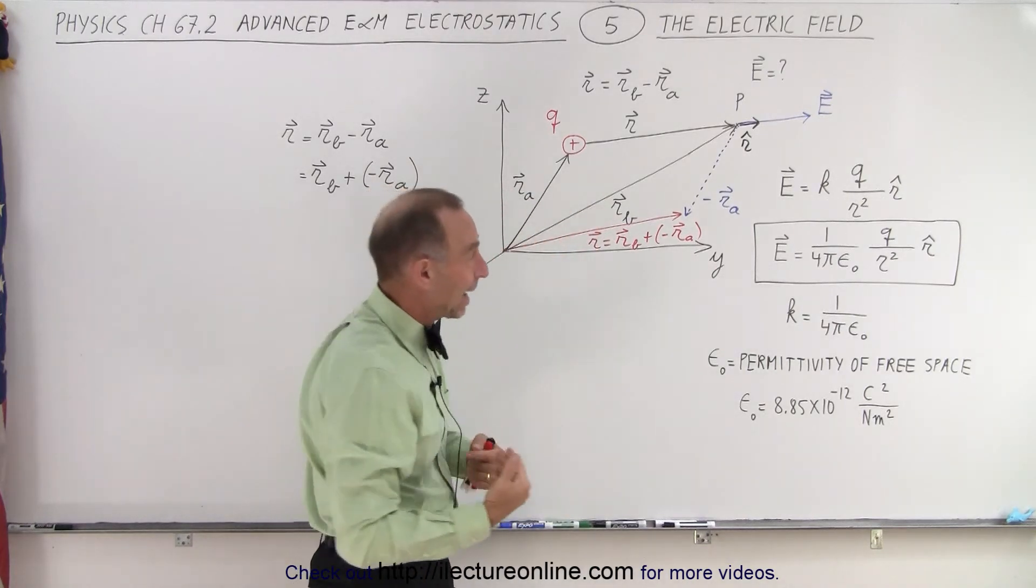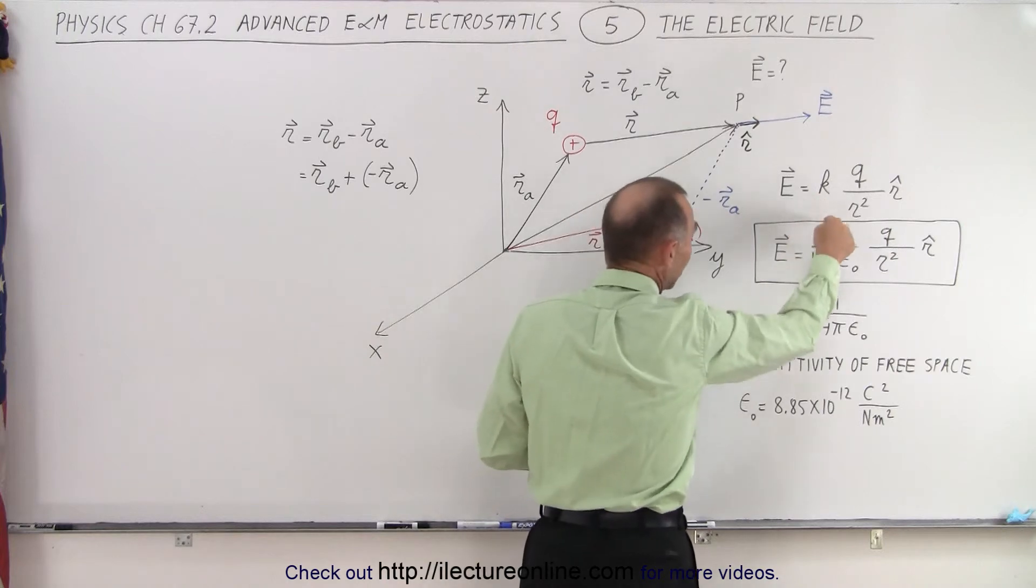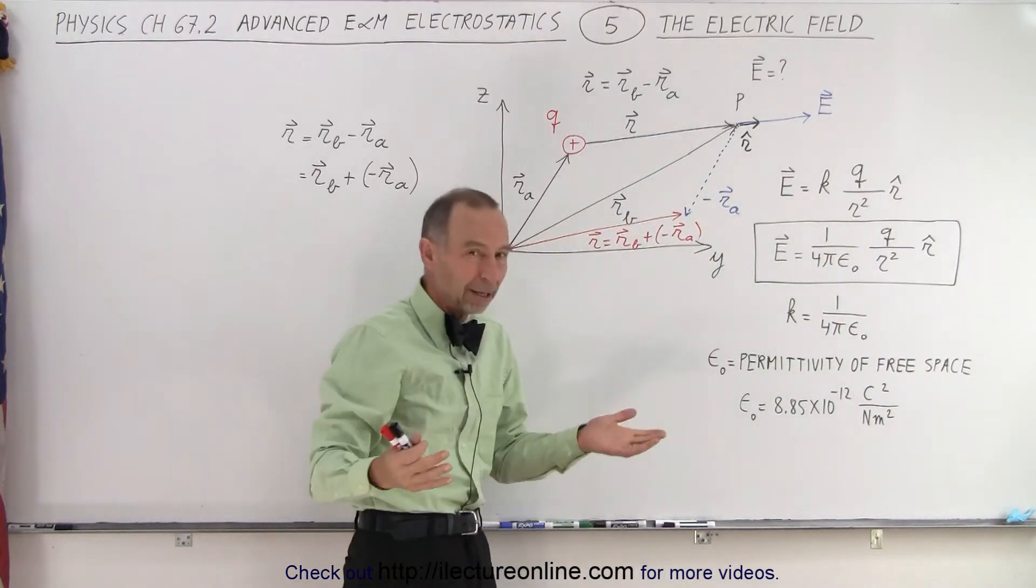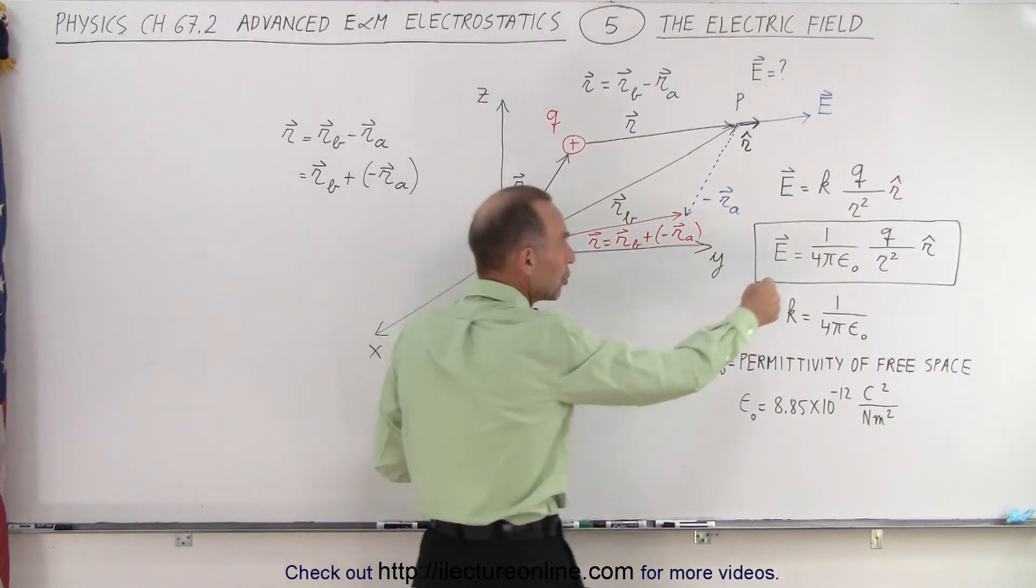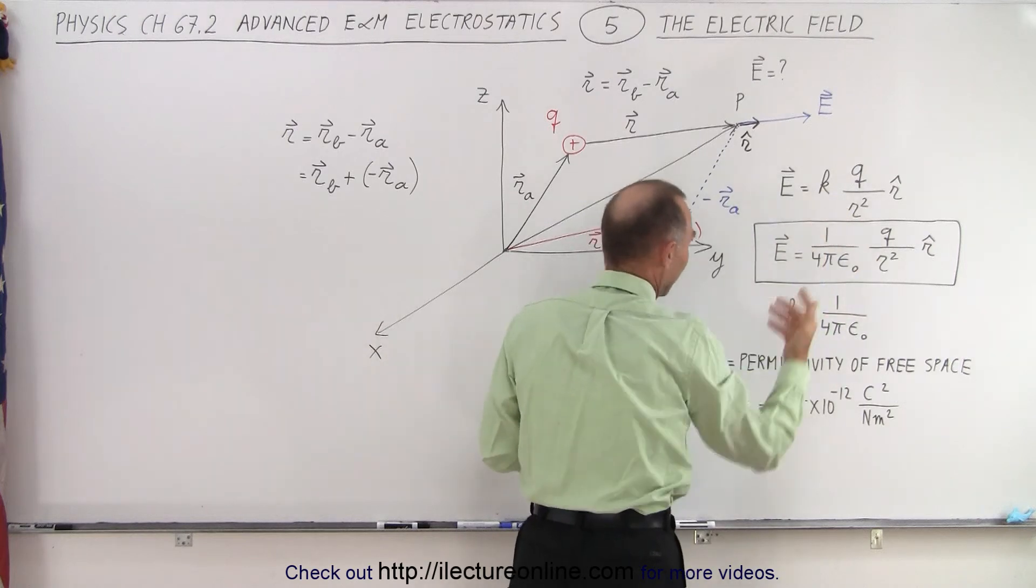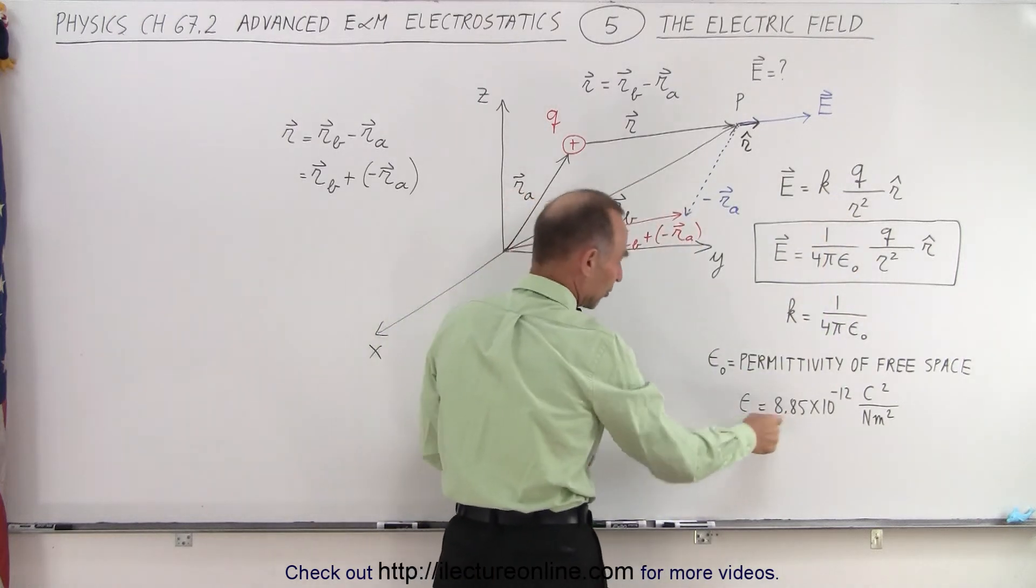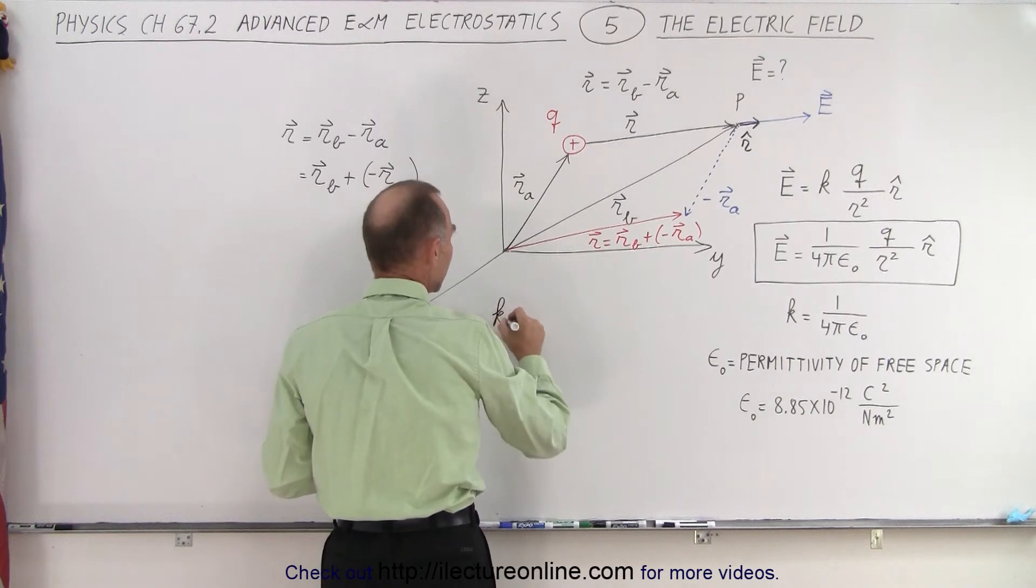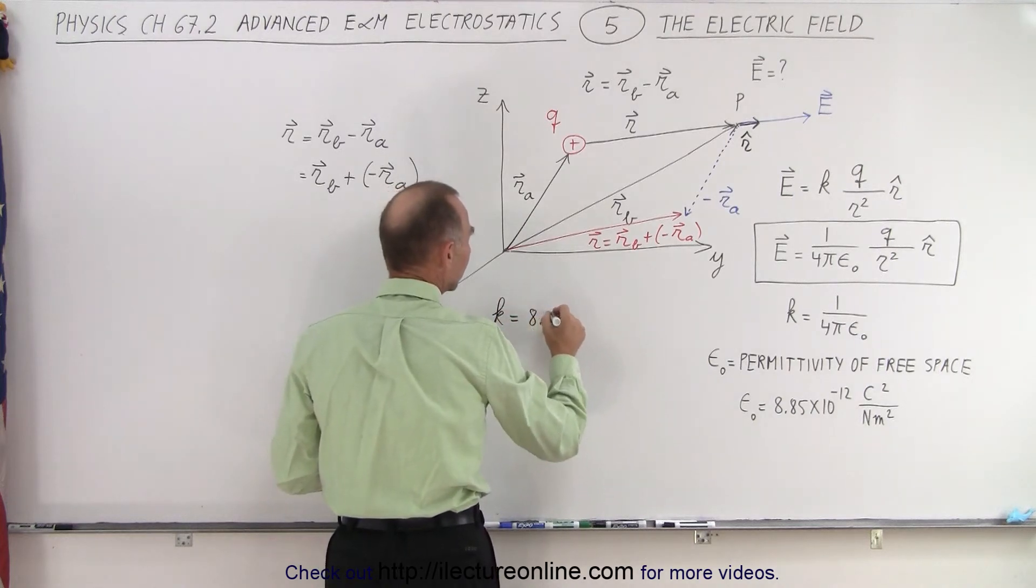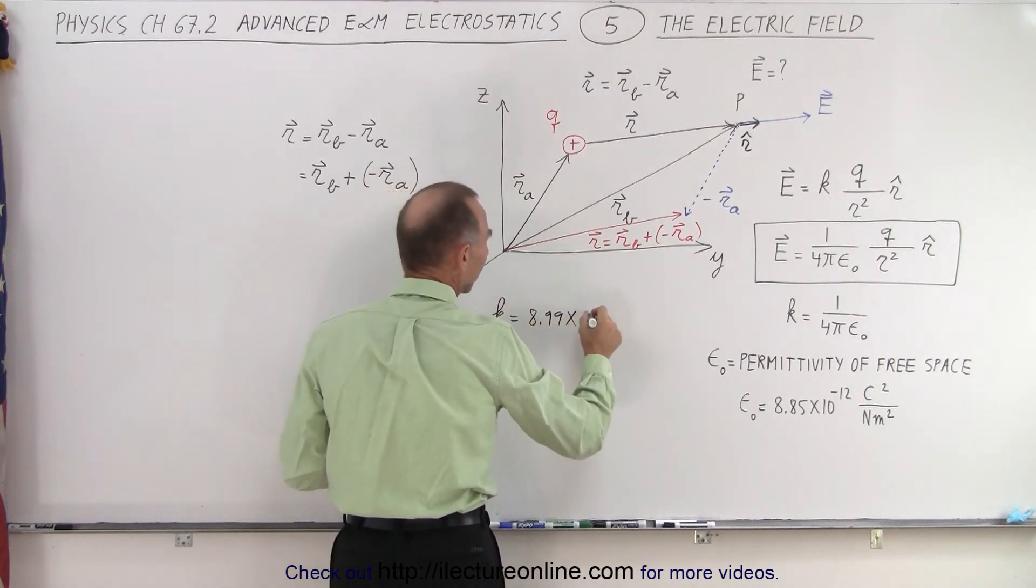The reason why I like k better is it's a lot easier to write k than 1 over 4 pi epsilon sub not, but a lot of books and authors will use this instead of that. If you plug this into your calculator you get k to be equal to 8.99 times 10 to the ninth Newton meter squared per coulomb squared.